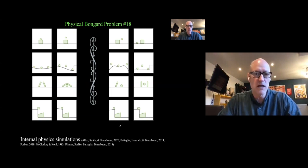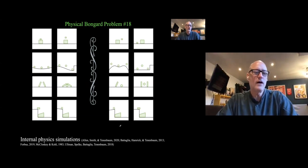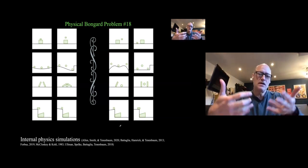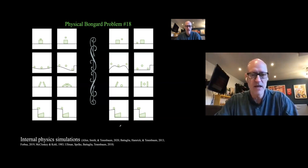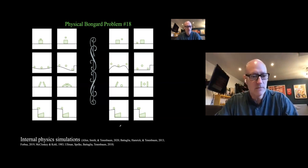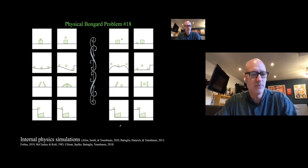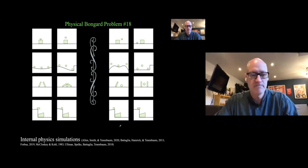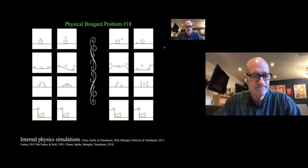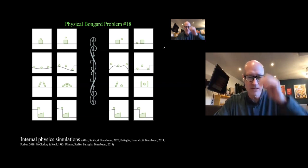Our variant of Bongard problems are called Physical Bongard problems. They involve imagining that the objects in a scene have normal forces of physics acting on them — gravity, collisions, inertia, momentum — in a two-dimensional physics. Imagining that physics is important for coming up with the answer to these problems.